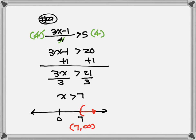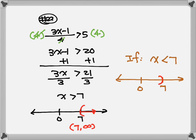Now let me show you an if. If at the end you have x is less than 7: always indicate your 0, 7 is over here. We use parenthesis on the 7 but point to the left, so draw the arrow to the left. Last step, interval notation — follow your graph: parenthesis 7. Every time it's pointing to the left it will be negative infinity; if it points to the right it will be positive infinity.